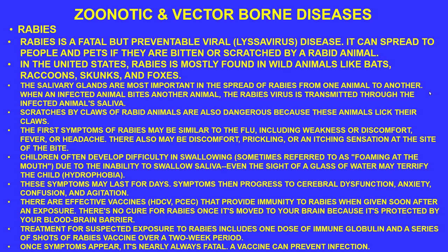In states like Massachusetts, rabies vaccine was incorporated into feed pellets attractive to raccoons and distributed by helicopter over areas with high raccoon populations — an innovative public health strategy. First symptoms of rabies may resemble the flu: weakness, discomfort, fever, or headache, plus discomfort, prickling, or itching at the site of the bite.